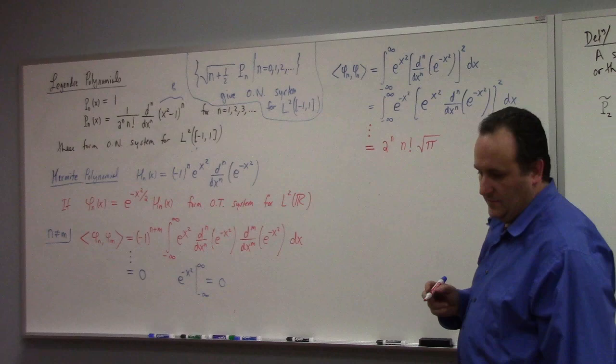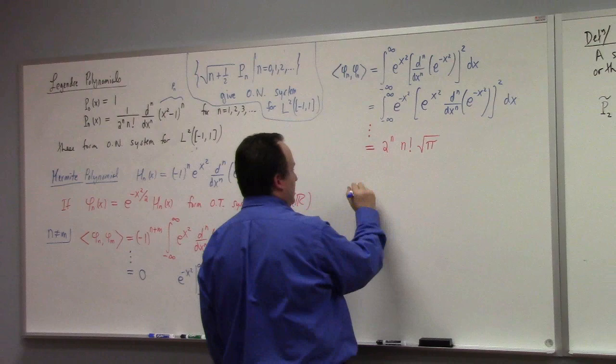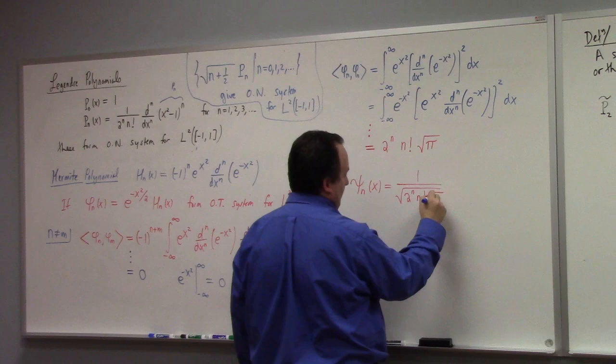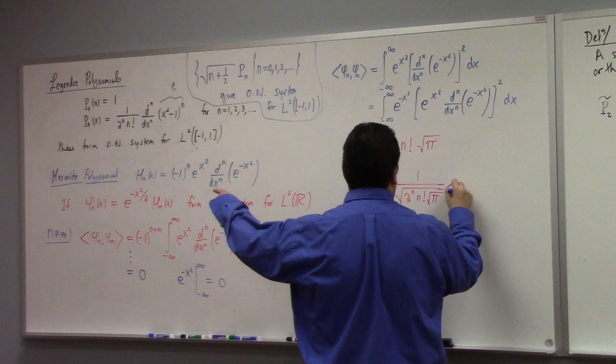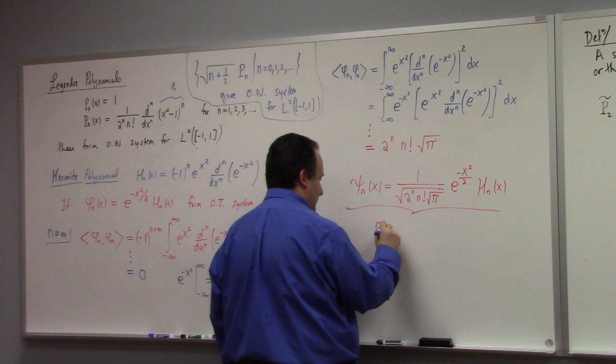So that being the case, that means that you divide by the square root of that stuff to normalize it. So this gives us psi n of x equals 1 over the square root of 2 to the n times n factorial times the square root of pi times my phi n, which was e to the minus x squared over 2 times the Hermite polynomial h_n of x. These right here give you an orthonormal system.